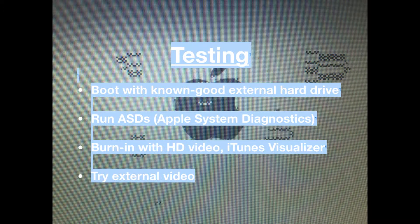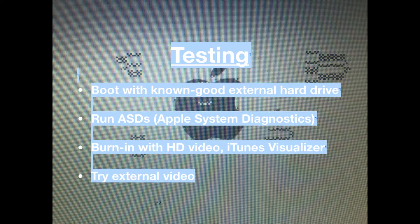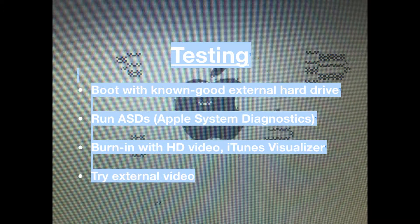The bootable hard drive needs to have an OS up to High Sierra, because 2011s don't take Mojave. I still use Snow Leopard for external drives because it boots super quickly. You want to boot with the external hard drive and go through the system and see what you see. You can run Apple ASDs — Apple system diagnostics tools — they're out there to be found. Sometimes they will show you GPU defects, sometimes not. I'm not a huge fan of diagnostics; I prefer to kick the tires and make the device show me that it has a problem.